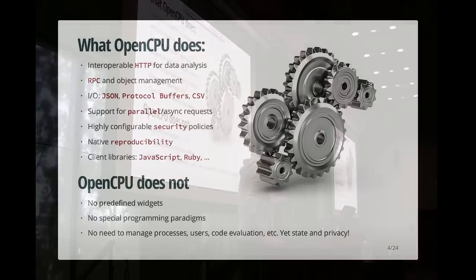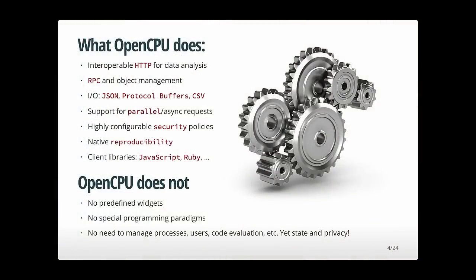OpenCPU is an interoperable HTTP API for data analysis. It focuses on remote procedure calls, which include remote function calls, remote script executions, and object management. Several data interchange formats are supported, including JSON, protocol buffers, and CSV. Everything naturally supports parallel and asynchronous requests. It's highly configurable, everything is naturally reproducible, and we have developed client libraries — first for JavaScript, with others working on Ruby and additional libraries.